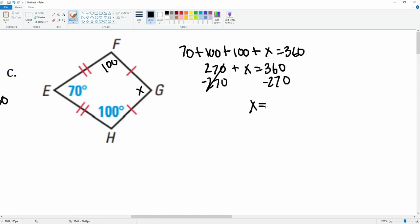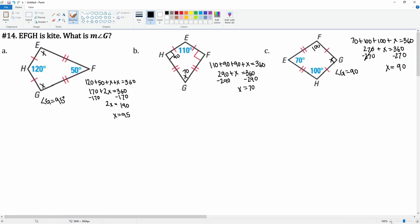That is 360 minus 270, which gets you 90. What is unique here is that angle G is a right angle at 90 degrees. And that is how you find angle measurements within a kite.